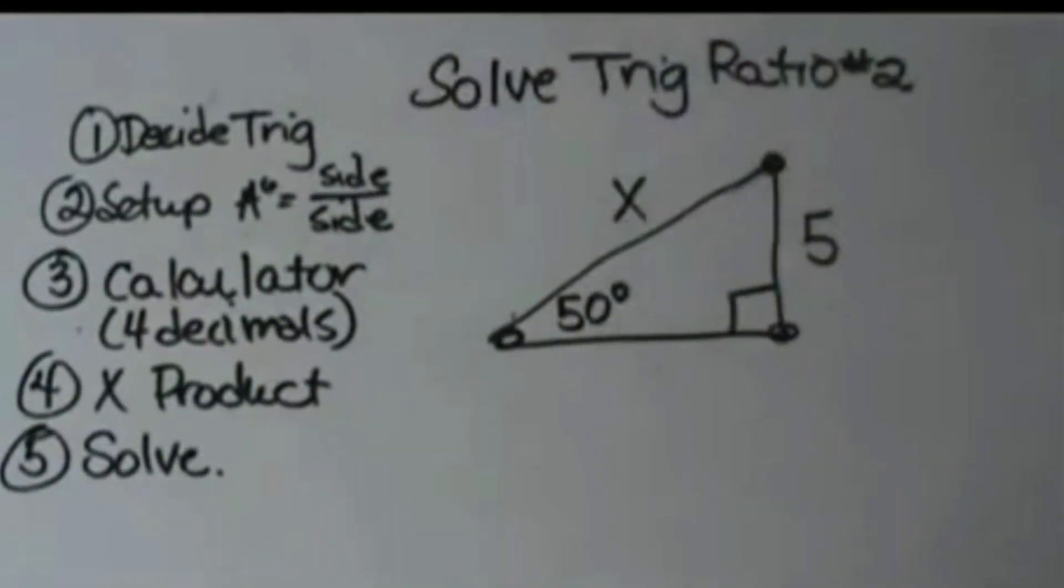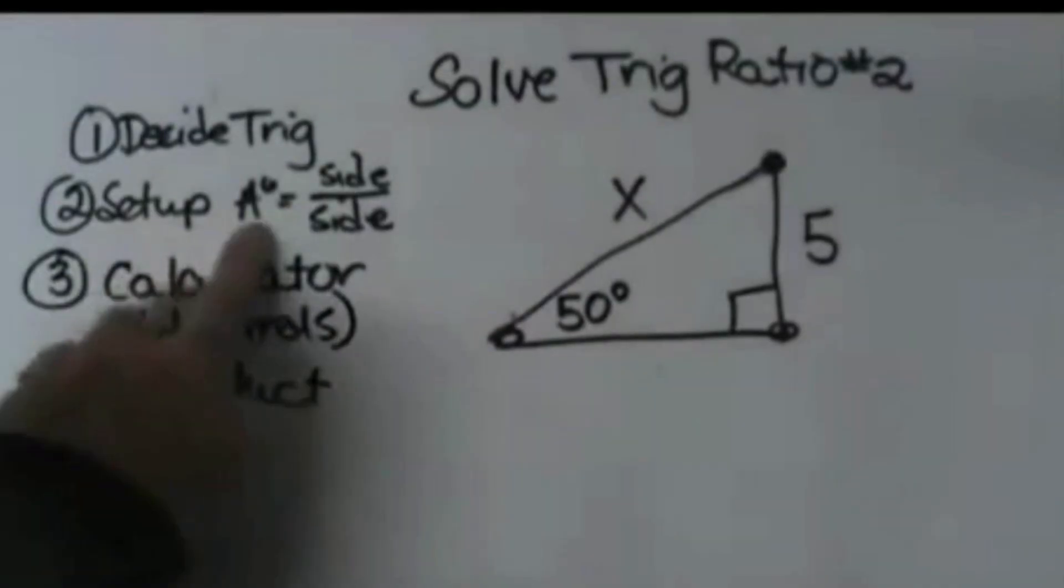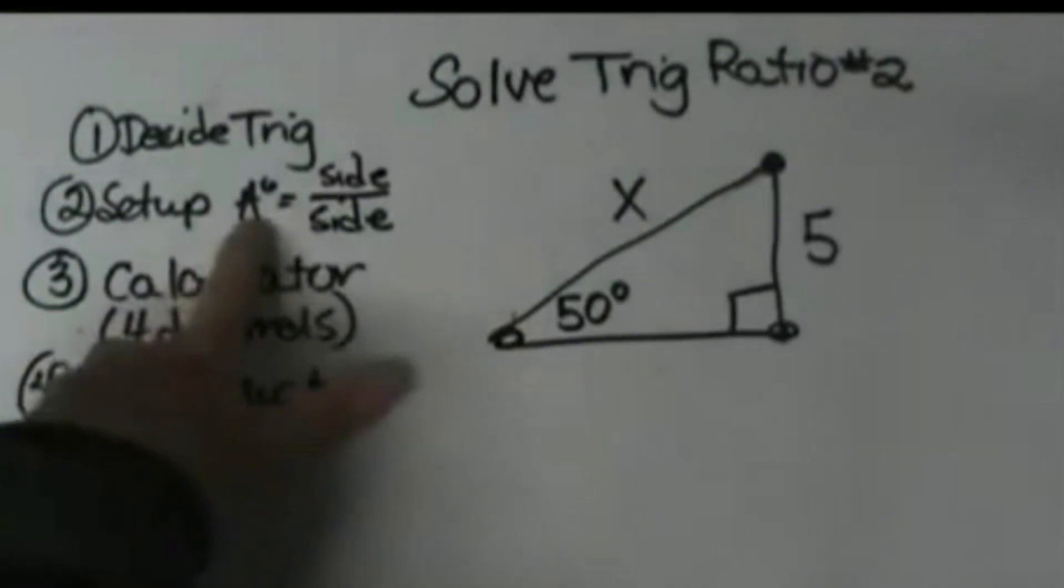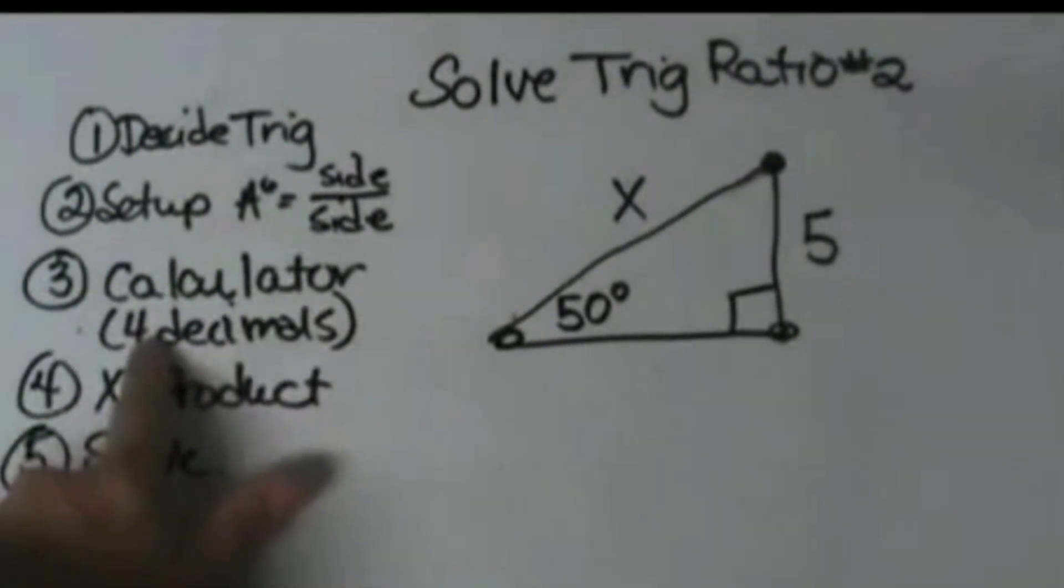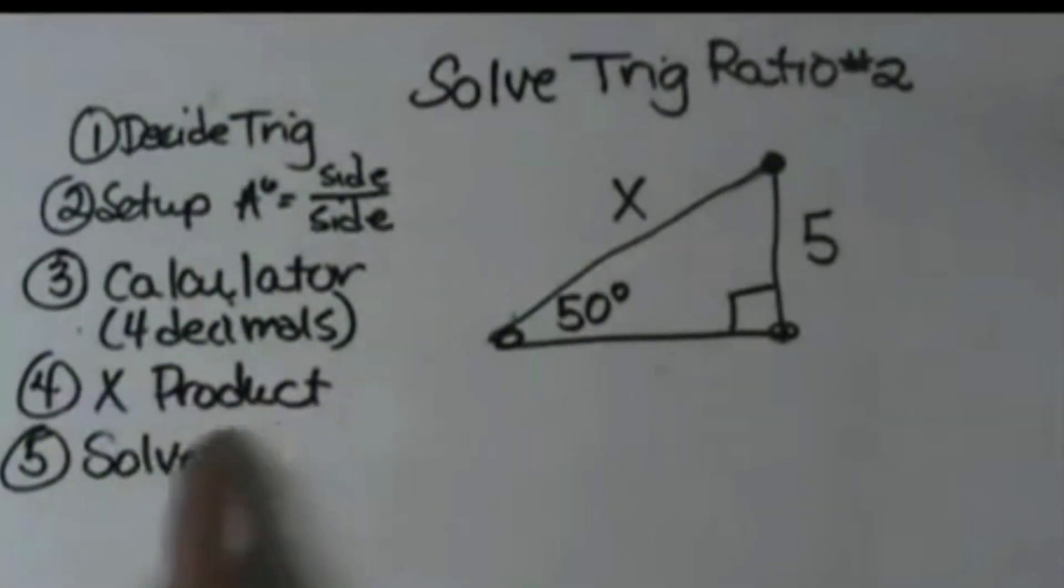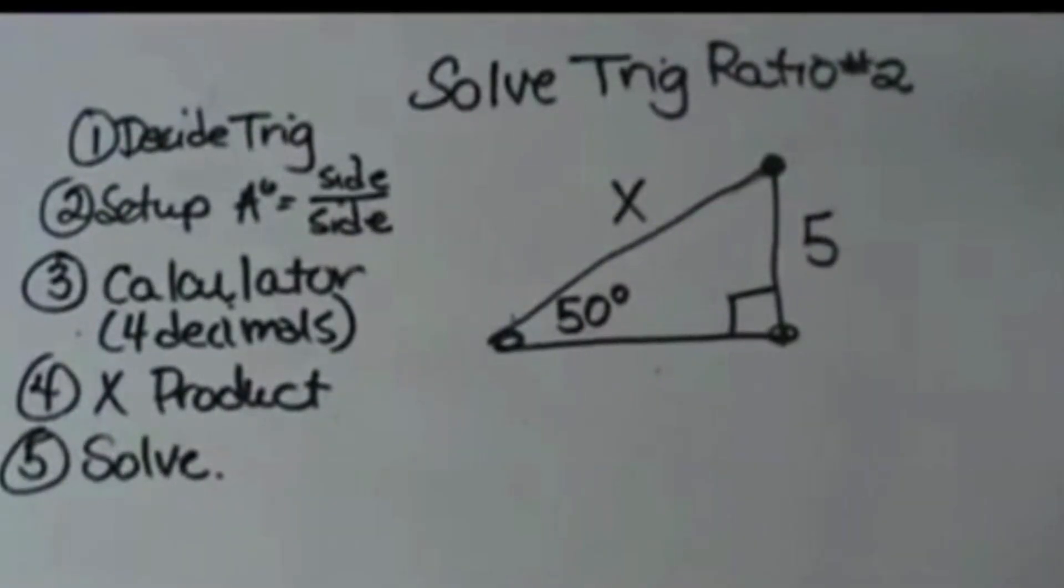First you're going to decide which trig ratio you are dealing with. Then once you decide your trig ratio, you're going to set it up with the angle and the ratio of the two sides. After you set it up, then you're going to use your calculator to change the trig ratio into a decimal with 4 decimal places. You're going to throw one underneath that decimal and use cross products, and then you're going to do any solving.